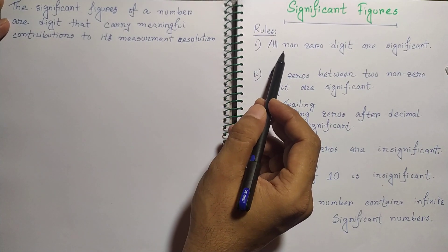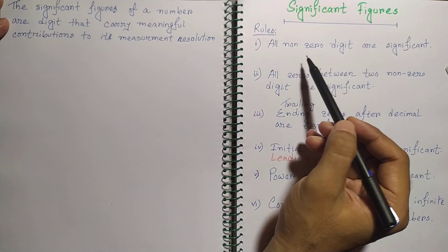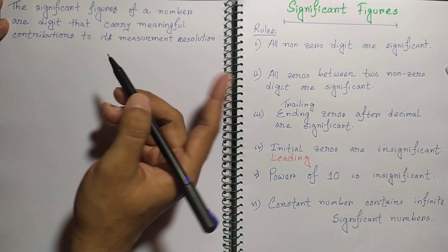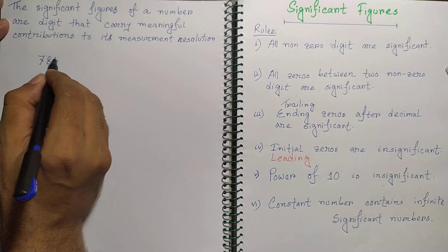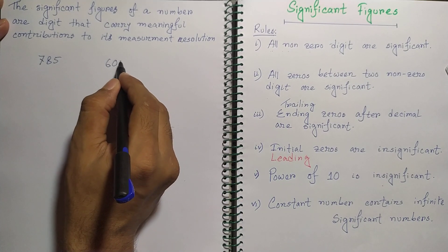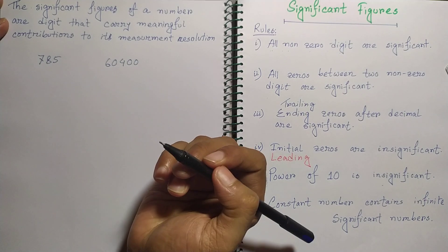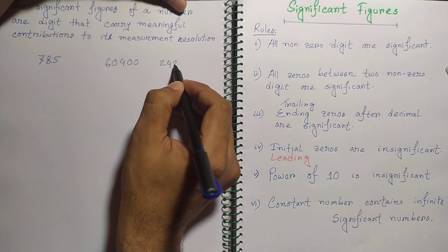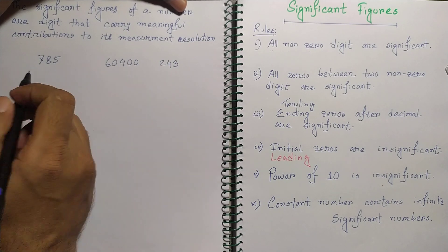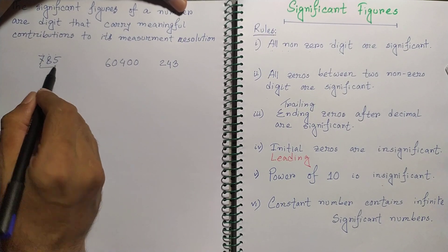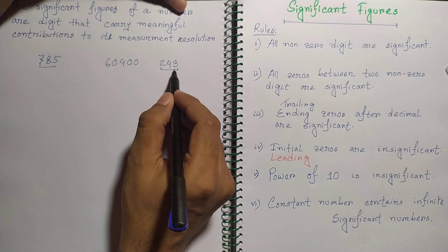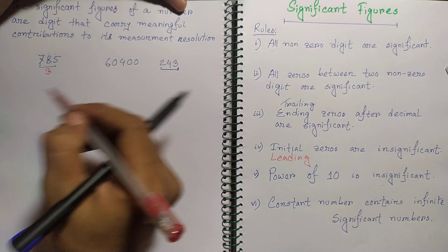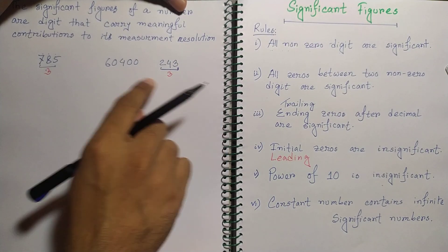Rule number one: all non-zero digits are significant. Think about 785 or 243. Here 7, 8, and 5 are all non-zeros, and 2, 4, and 3 are all non-zeros. So we have three significant figures in both numbers.